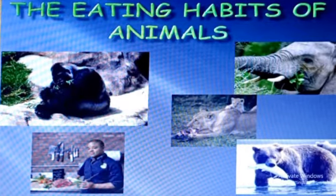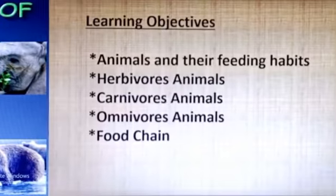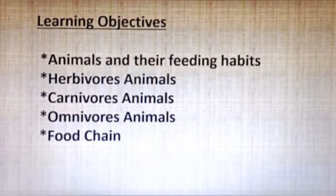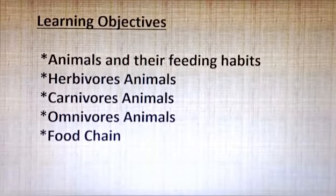These are the different animals which eat different types of food. In this lesson we will learn about animals and their feeding habits: herbivorous animals, carnivorous animals, omnivorous animals, and also we will learn about the food chain.